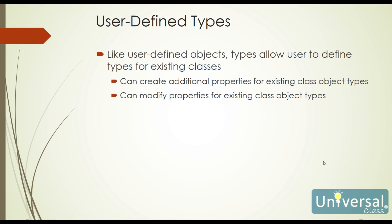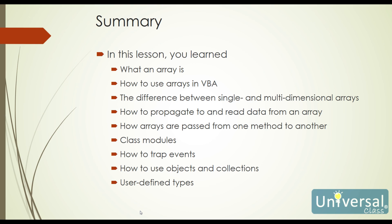A lot of our existing objects have properties and actions already assigned to them. We can use what's called a user-defined type to create additional properties for existing class object types, and also modify properties for existing class object types.